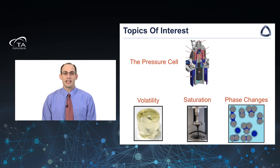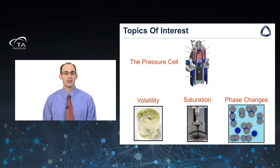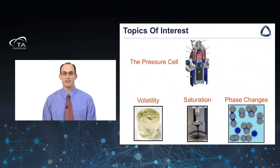The talk today will have four different components. First, we'll talk about the pressure cell itself — how it works, its limitations, and bounds on using it. Then we'll talk about three important categories of using high-pressure rheology: volatility, saturation, and phase changes. We'll give a couple of examples in volatility, an example of saturation, and an example of hydrates under the phase change.